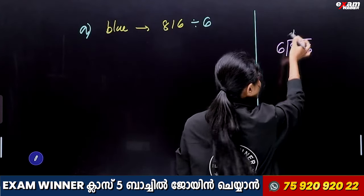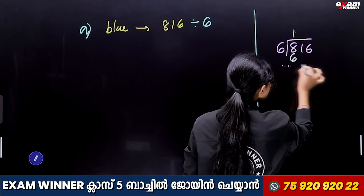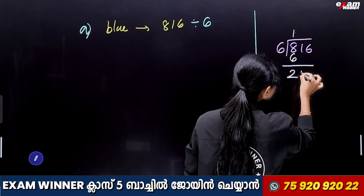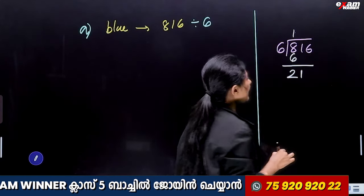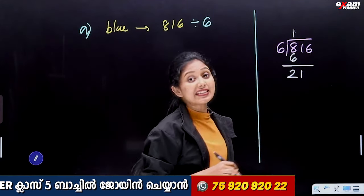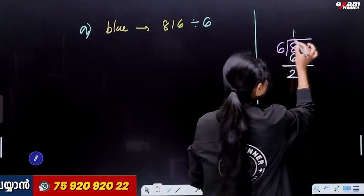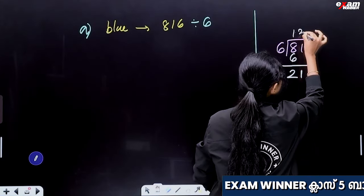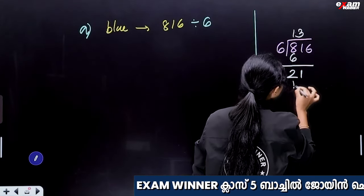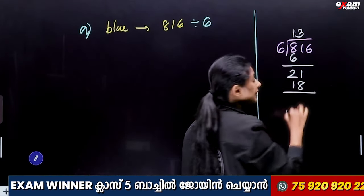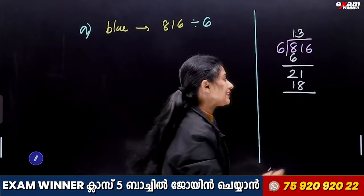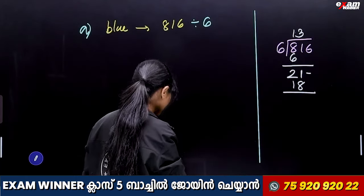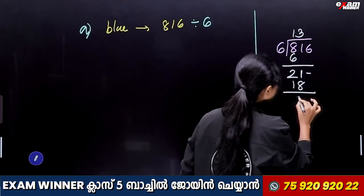8 goes 1 time. 1 six is 6. 8 minus 6 is 2. Then bring down 1. 21 — how many times does 6 go? 6 twos are 12, 6 threes are 18. 21 minus 18 is 3.